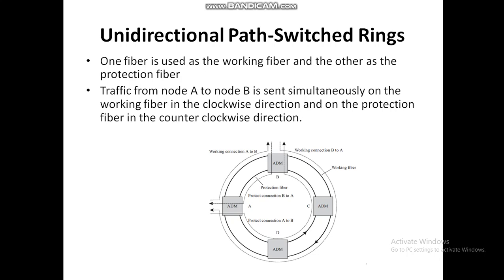Under normal operating conditions, node B receives traffic from the working fiber. If there is a link failure — say link AB fails — then B will switch over to the protection fiber and continue to receive the data. In case of a failure in the A-to-B connection, B will receive data from the protection side. The switchover is done on a connection-by-connection basis.